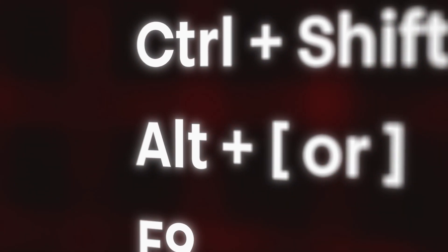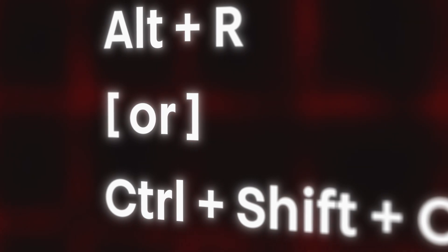Here are the ones I use the most, in no specific order: Control D to duplicate your layer; P, S, R and T to change layer options; U to see all keyframes; Control Y to create a new layer; Control Shift Y for a new adjustment layer; Alt left or right bracket to trim a layer; F9 to easy ease; Control Shift D to split a layer; Alt R to reverse a keyframe order; left or right bracket to set the in or out point of the layer; and Control Shift D to pre-compose.